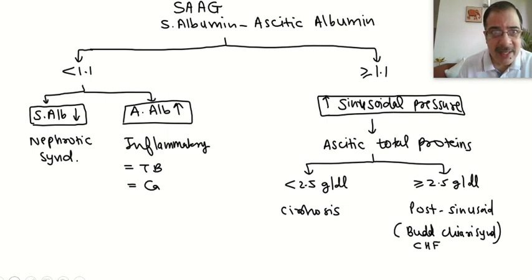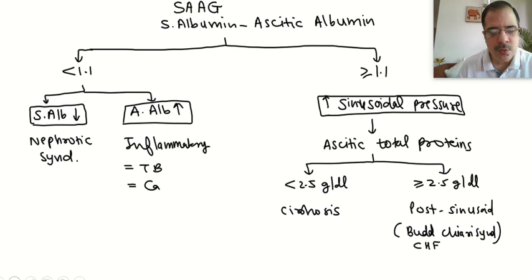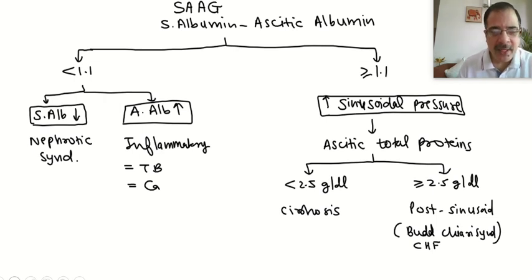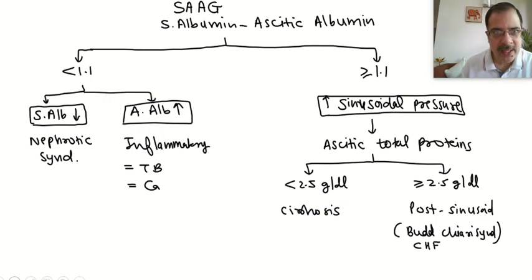If ascitic total protein is more than or equal to 2.5 g/dL, these are post-sinusoidal causes — obstruction of the hepatic vein causing back pressure on the sinusoidal space, or cardiac causes like congestive heart failure (CHF) or constrictive pericarditis. In these conditions, total protein in the peritoneal space is more than or equal to 2.5 g/dL. This is a simple flowchart of the causes of ascites.